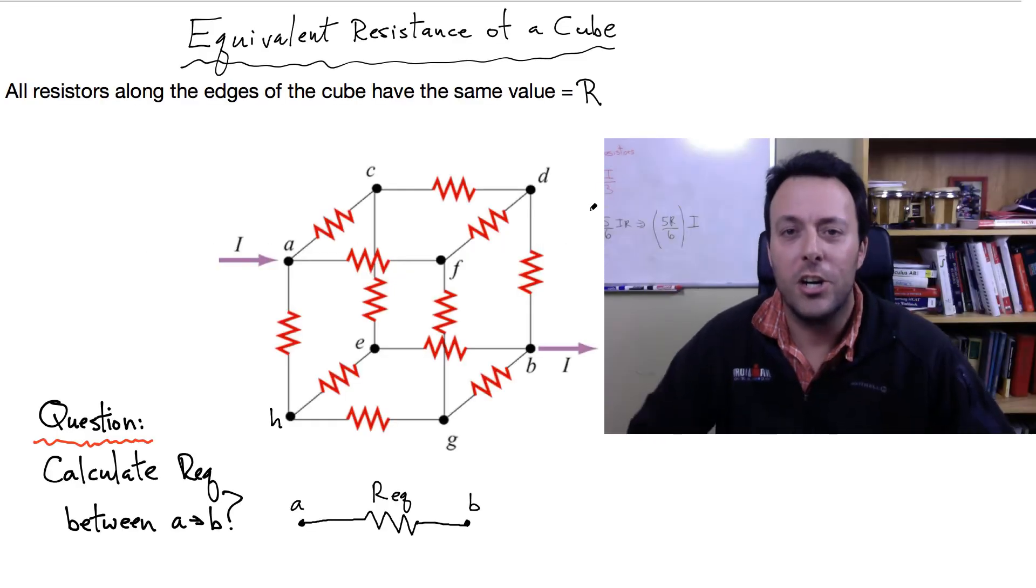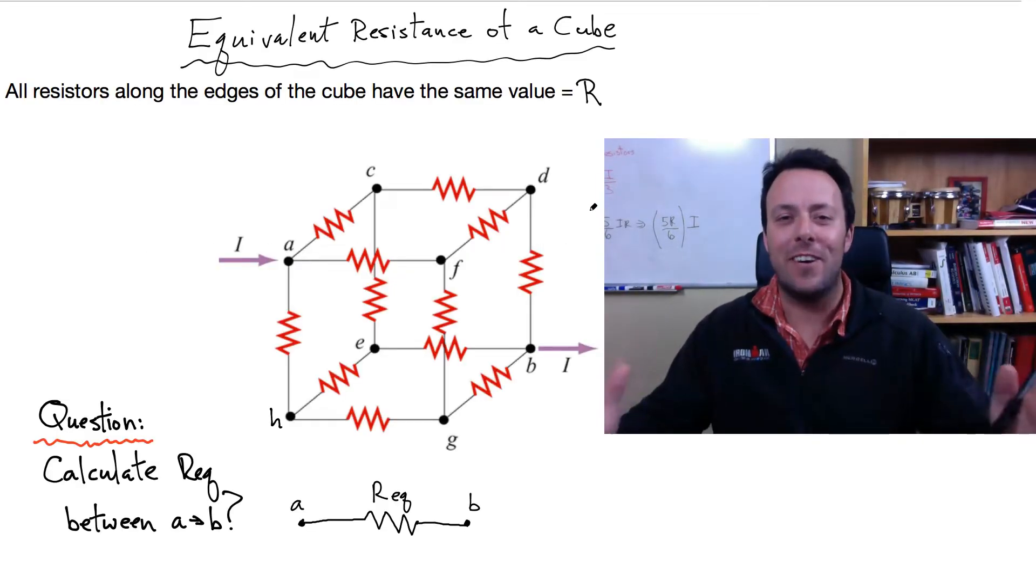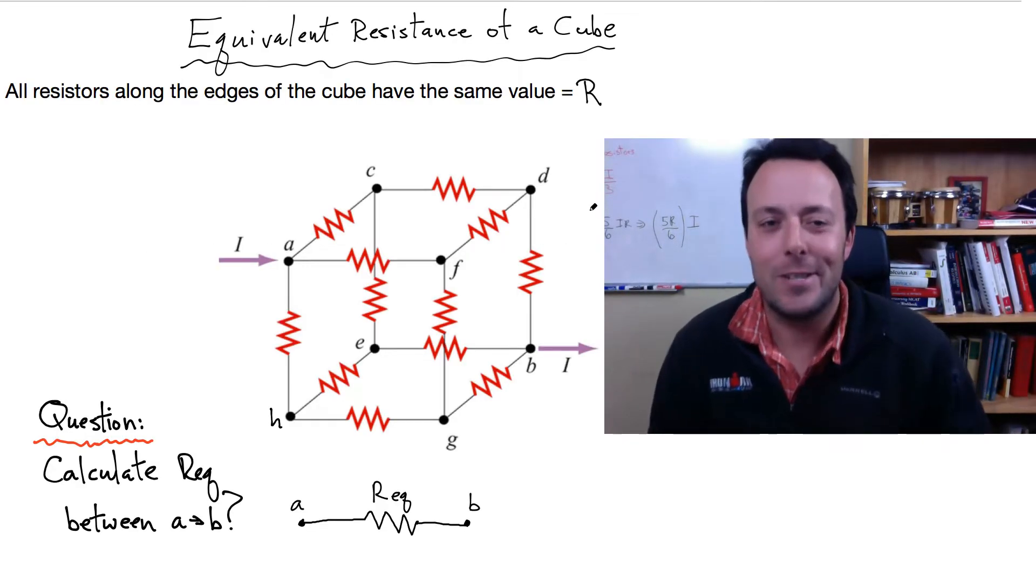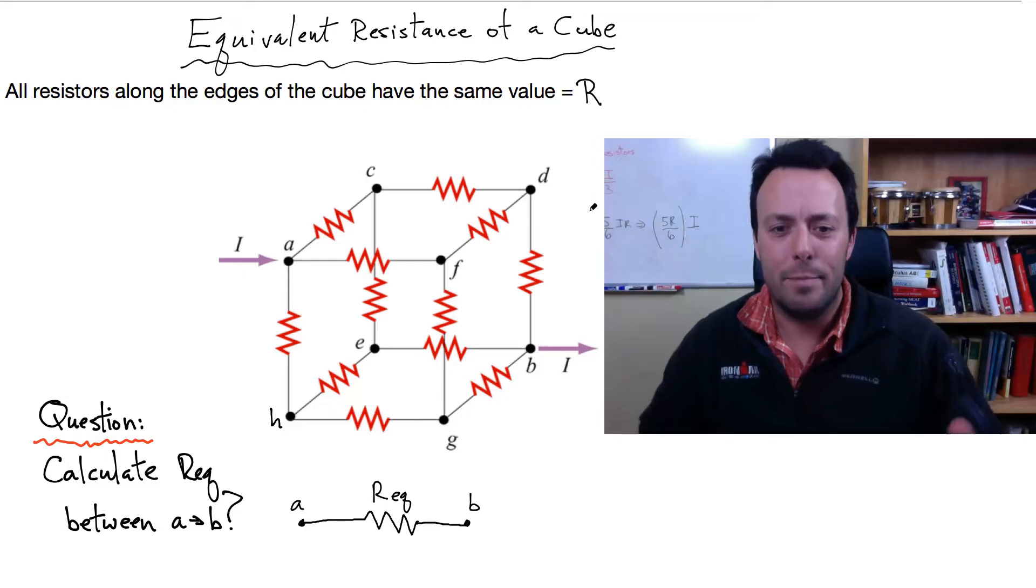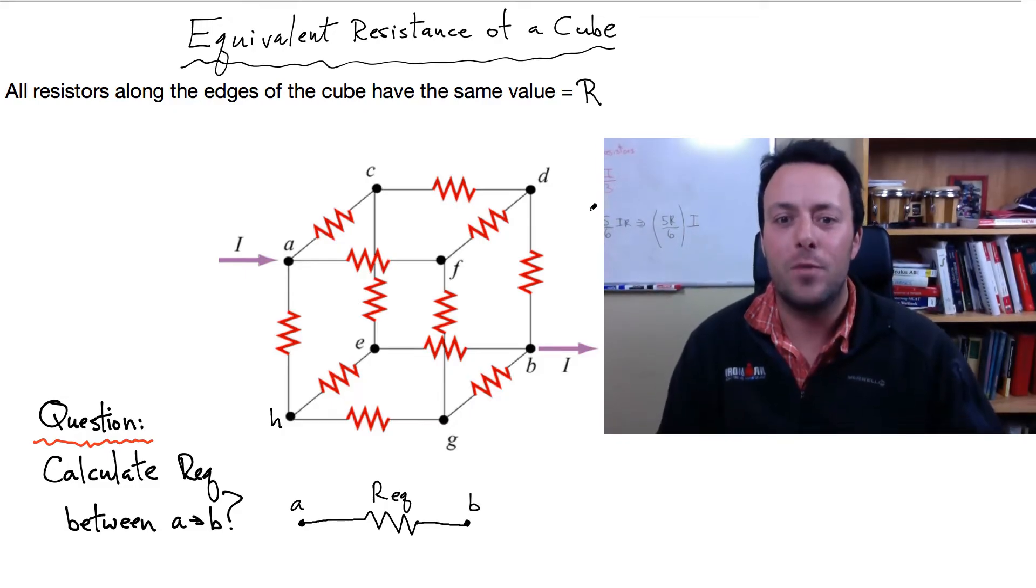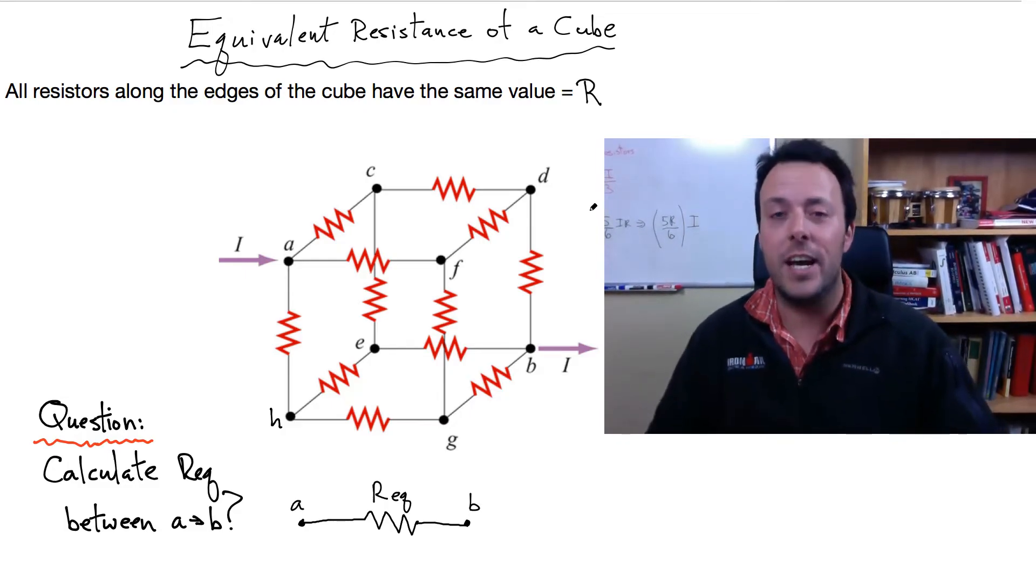PhysicsNinja.org. Good evening, physics students. How are you? I've got a really good problem for you tonight. Today we're going to look at the equivalent resistance of a cube. So have a look at it. I've plotted a cube here. I've got 12 resistors along each edge of the cube. They're all going to have the same value.